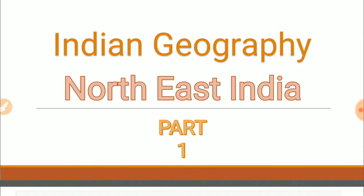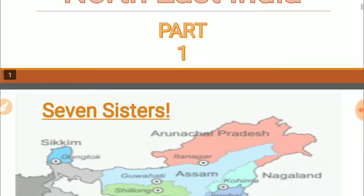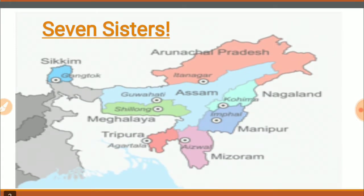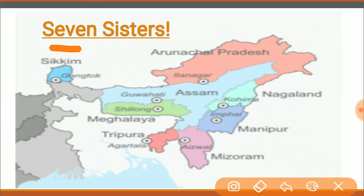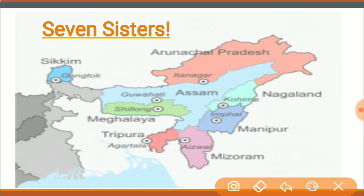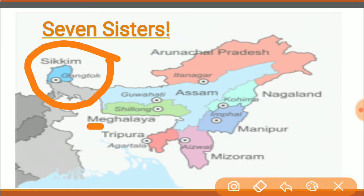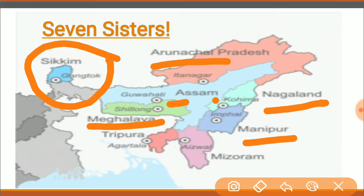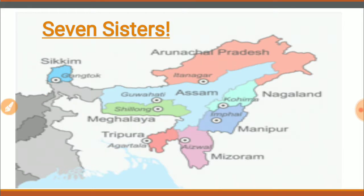The first slide shows the northeastern part of our country, called the seven sisters — because there are seven states: Sikkim, Meghalaya, Assam, Arunachal Pradesh, Nagaland, Manipur, Mizoram, and Tripura. The capitals are also mentioned: Gangtok is the capital of Sikkim.